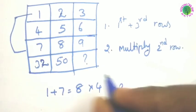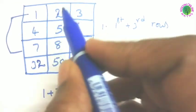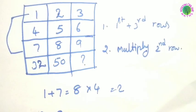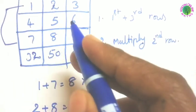Now check with the second column. We have to add 1st and 3rd row numbers, so 2 plus 8, if you are adding, 10 you will get. After that you have to multiply the second row digit.